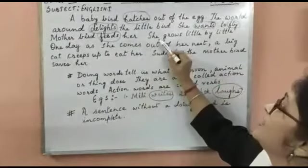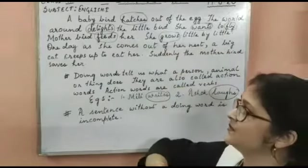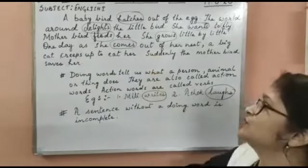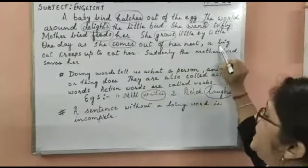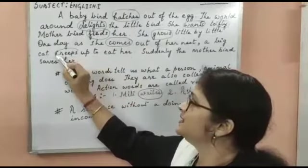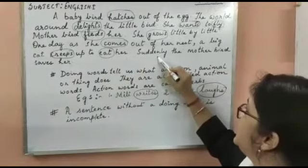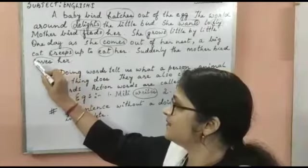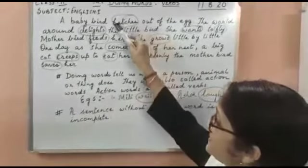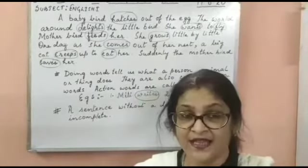She grows little by little — the word 'grows' is a doing word. One day she comes out — the word 'comes' is an action word. A big cat creeps up to eat her — the word 'creeps' is an action word, and the word 'eat' is also an action word. Suddenly, the mother bird saves her — the word 'saves' is an action word, doing word, verb. The words I have encircled tell us some actions done by the baby bird, the mother bird, and the cat.